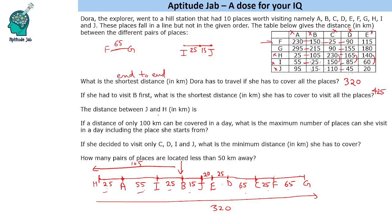What is the distance between J and H? J is here and H is here. So just add 105 plus 15, which is 120.